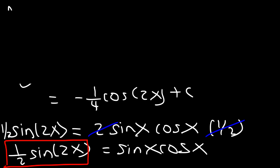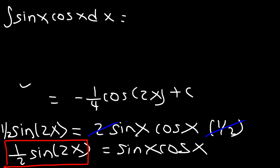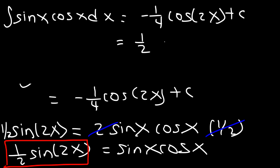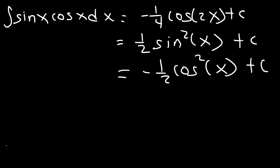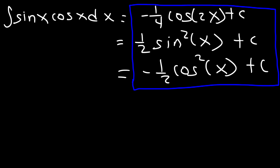So the three answers we got for the integral of sine x cosine x were: negative one-fourth cosine 2x plus C, one-half sine squared x plus C, and negative one-half cosine squared plus C. The reason we have these three answers is because there are multiple forms of the double angle formula for cosine 2x.